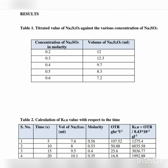Table 2: calculation of KLa value with respect to time. Columns are: time (seconds), volume of Na2S2O3 (mL), molarity (M), oxygen transfer rate OTR (g·h⁻¹·L⁻¹), and KLa. KLa is calculated as OTR divided by 8.43 × 10⁻³.